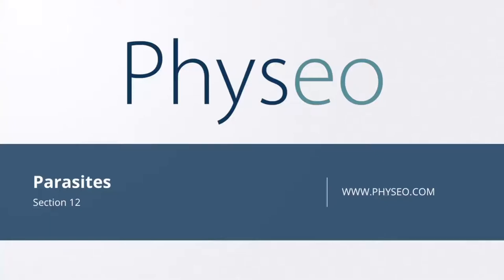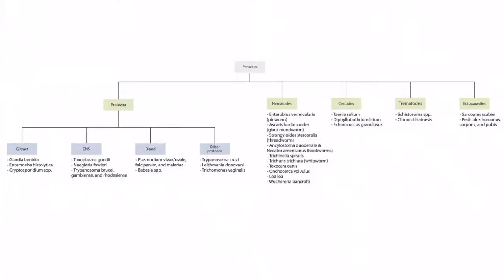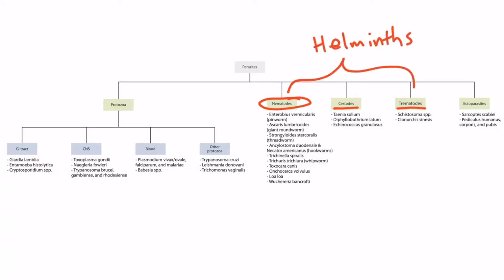Welcome to section 12 of Parasites. This is our parasite overview figure. In the next several videos, we'll be discussing nematodes — you can see them right here — and you should also know that these are known as roundworms. From the diagram, you should know that nematodes, cestodes, and trematodes are all considered worms or helminths. So you may hear us refer to these bugs generally as helminths.